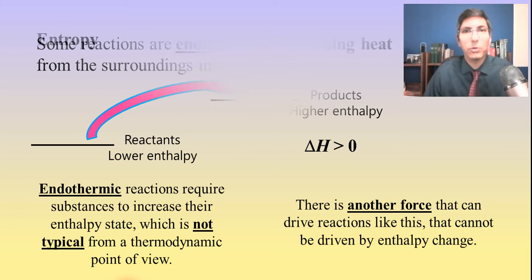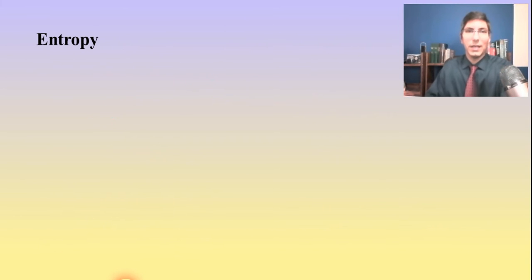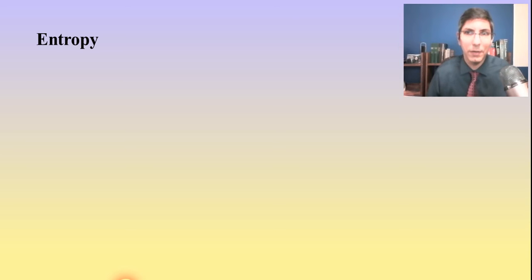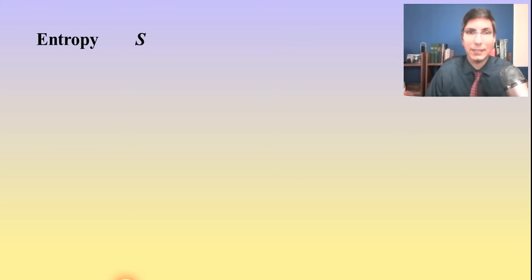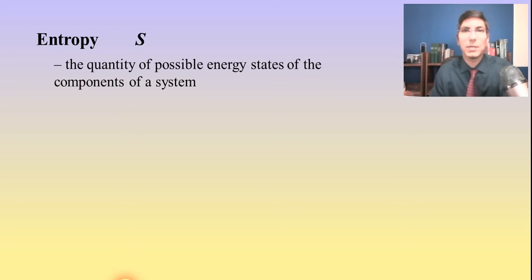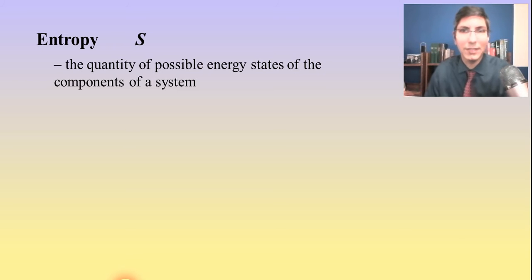Entropy sounds like enthalpy, but they're very different. Enthalpy is essentially heat and is represented by H. Entropy is represented by S. Entropy is specifically defined as the quantity of possible energy states of the components of a system. That's the official definition.